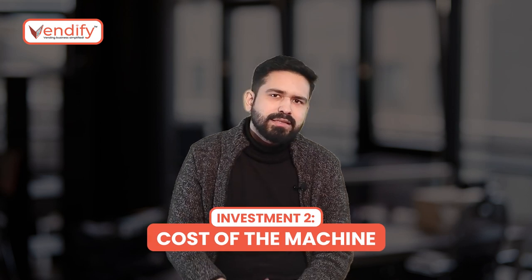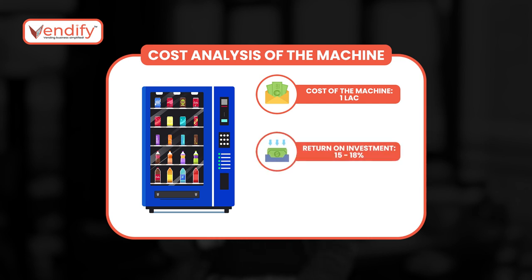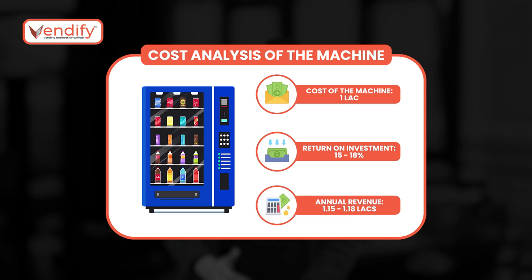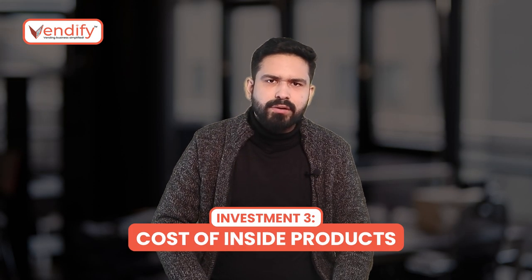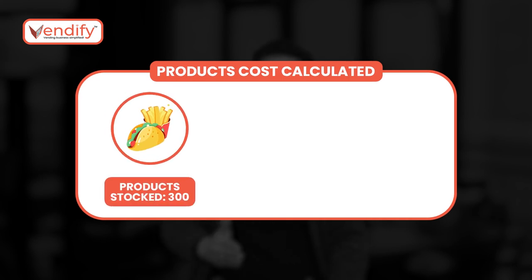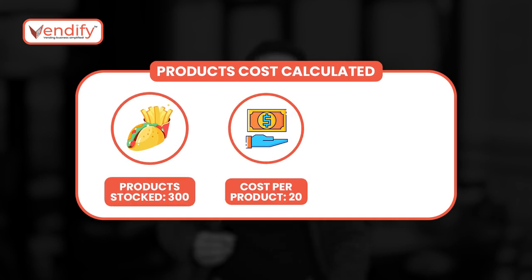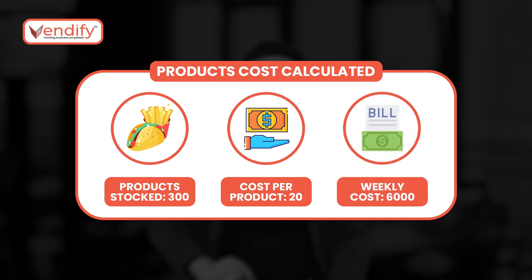Number two is the cost of the machine. Let's assume that a vending machine costs around 1 lakh rupees and has an average return on investment of 15 to 18%, which means the cost of a single vending machine can be recovered in almost one year. Number three is the cost of products inside the machine. You will have to purchase products for each vending machine. Let's assume you have 300 products stocked and the cost of each product is 20 rupees, so you have to spend 6,000 rupees every week to restock your vending machine.